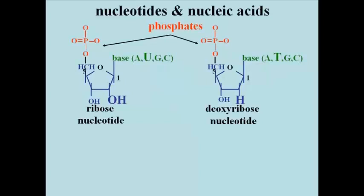This slide is just a reminder of the differences between RNA and DNA nucleotide monomers. Nucleotides consist of the bases adenine, uridine, cytosine and guanine in RNA, and adenine, thymine, cytosine and guanine in DNA.